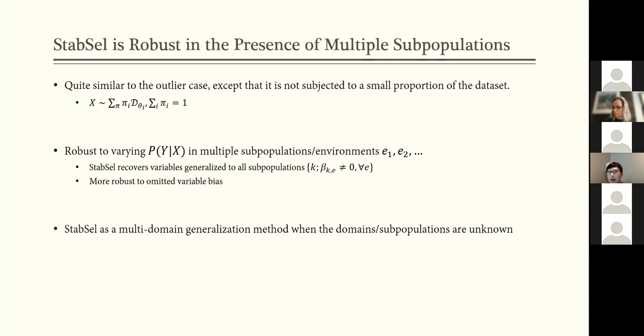So conceptually, we can think of it as a way to generalize to multiple domains or unseen domains when we don't have this exact information on the subpopulations in our data set.